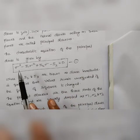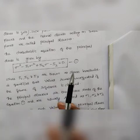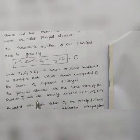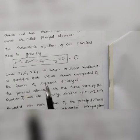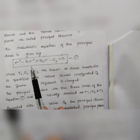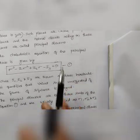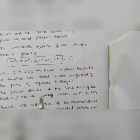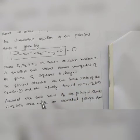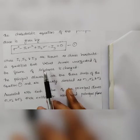This cubic equation can be solved using a scientific calculator. By solving the cubic equation, we obtain three roots. The three roots of this equation represent the principal stresses. These three roots are defined as sigma₁, sigma₂, and sigma₃ — the three principal stresses — and their corresponding planes are the principal planes.